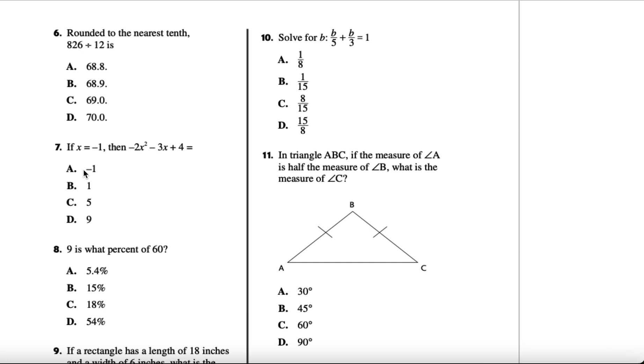Number 6: rounded to the nearest tenth, 826 divided by 12 is - we can do long division. I could do another video on how to do long division, but when you do the long division you should get 68.83. Rounded to the nearest tenth, we see that because this is 3, we'll keep the 8 where it is. So the answer should be 68.8, which is A.